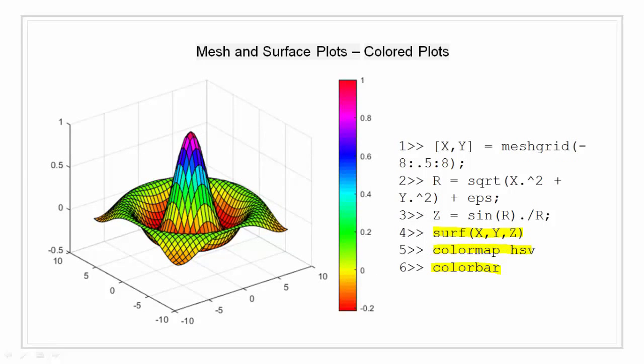I am going to use the same example to make a colored plot. Here, I will graph the sinc function as a surface plot, specify a color map and add a color bar to show the mapping of data to the color. A surface plot is similar to mesh plot except that the rectangular surfaces are colored. The color of each surface is determined by the values of z and the color map.